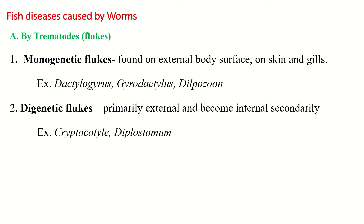There are two types of flukes, that is the trematodes — trematodes are called flukes. There are two types: the first type is called monogenetic flukes and the second type is called digenetic flukes. Monogenetic flukes complete their life cycle within a single host, and here the host is a fish. They can be transferred directly from one fish to another fish.